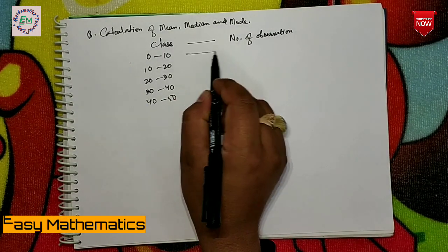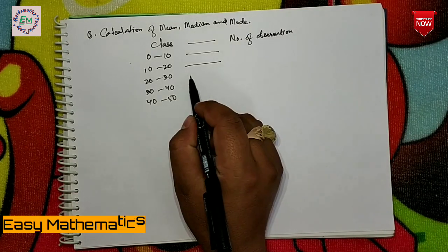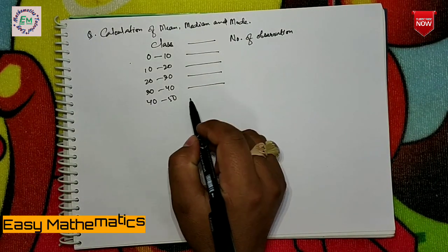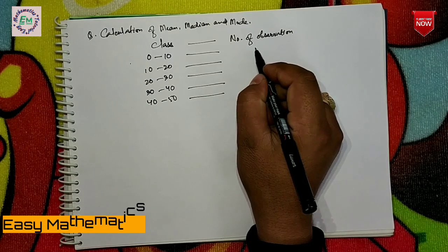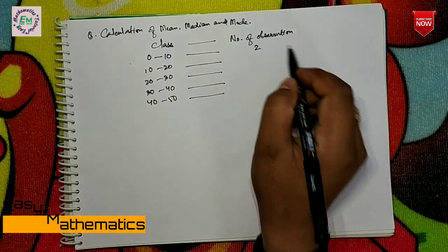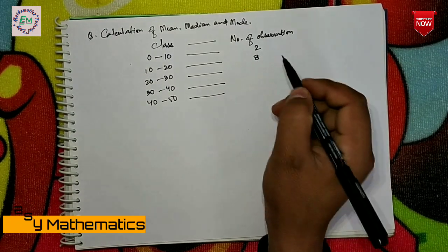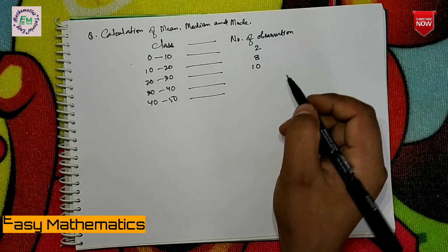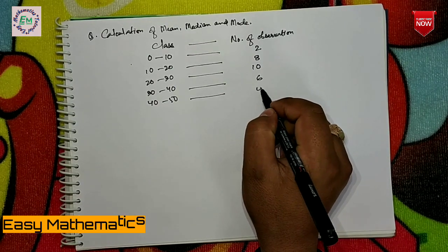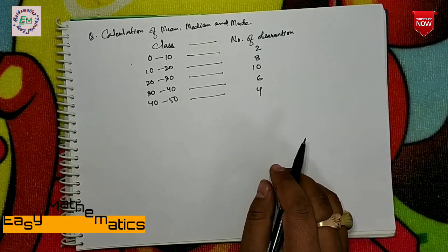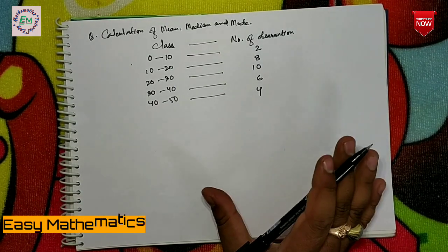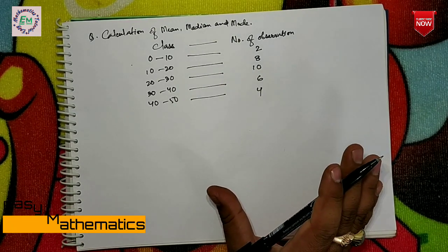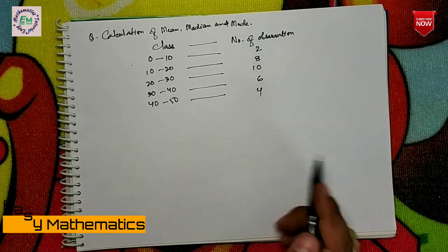When we go into the class, we have our observations and frequency. We have the frequency of these, and now for the class, we have to find the number of observations we already have. The last observation was in the class, and the first observation was in the first place.